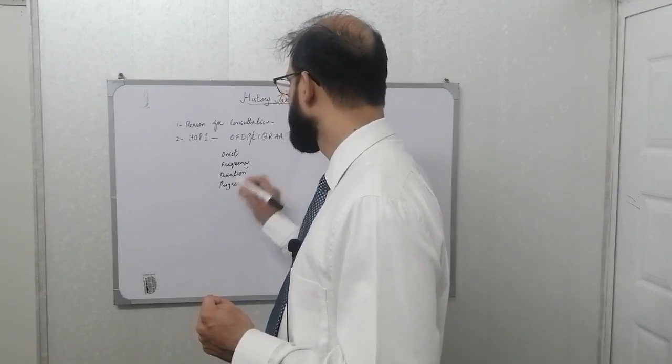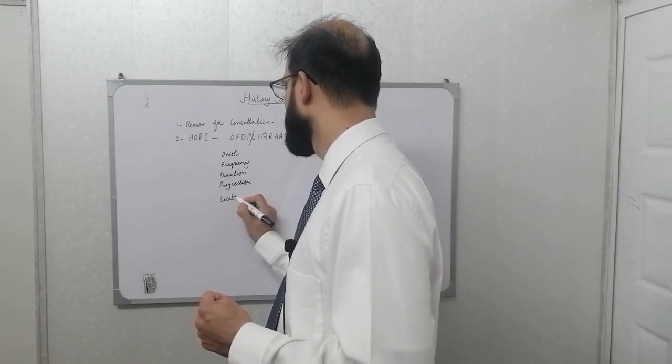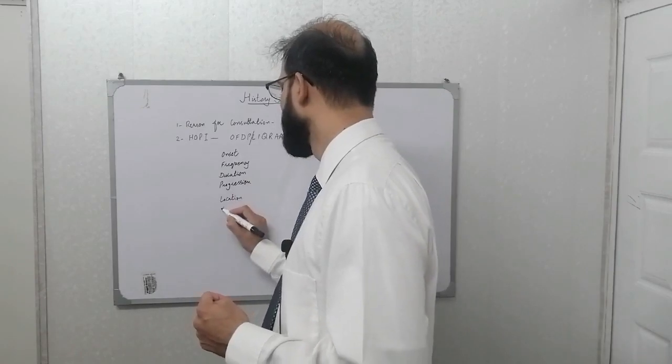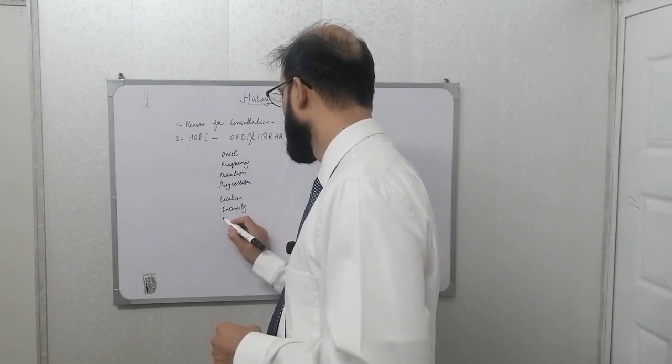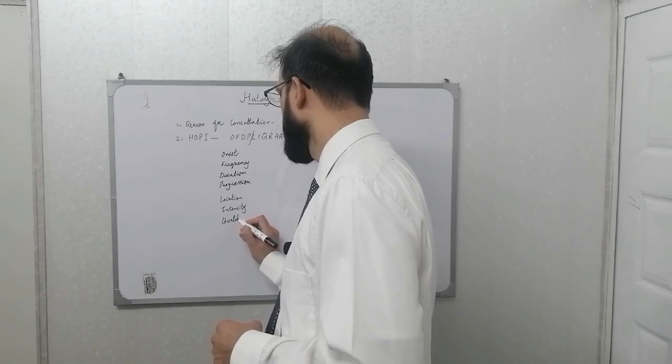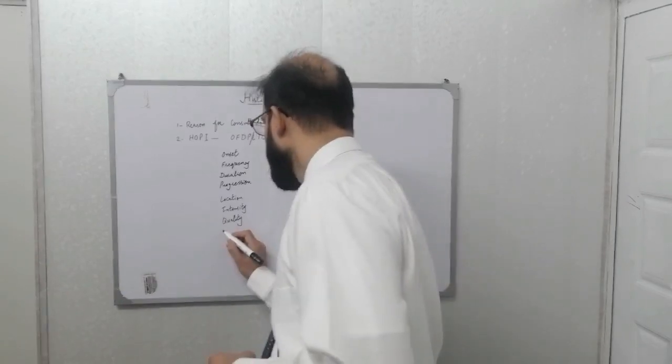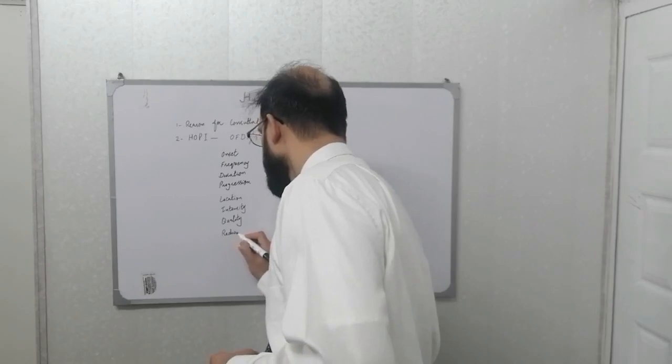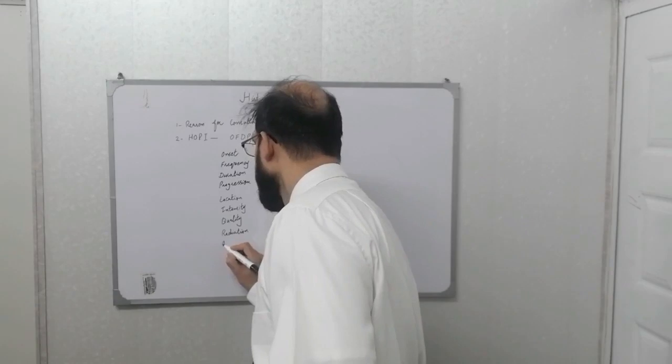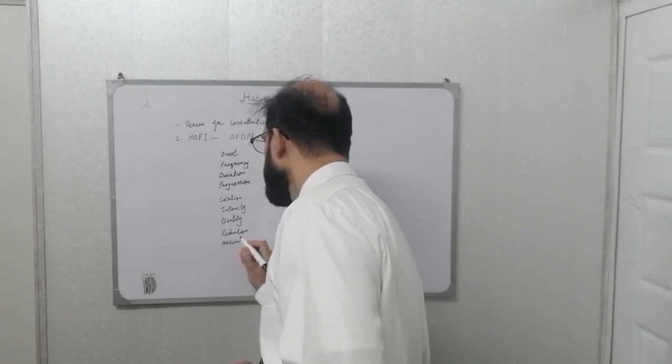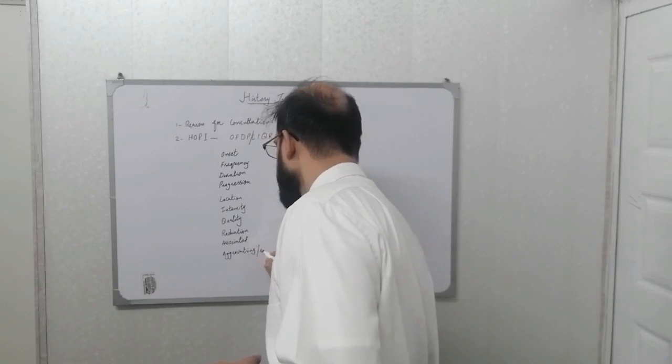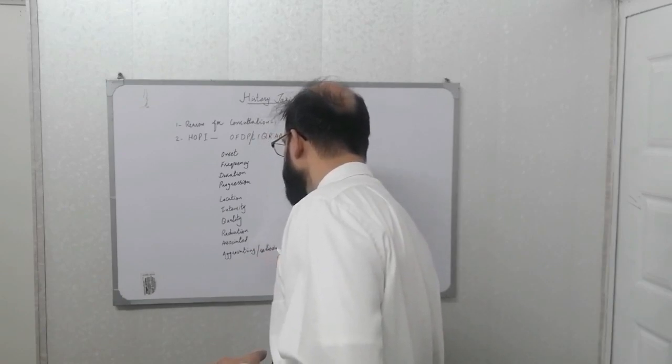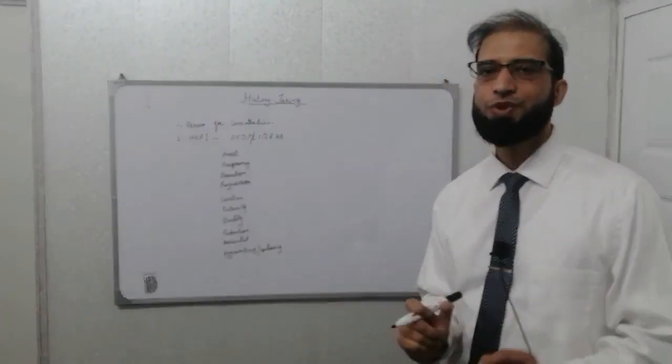And then for the extended scheme, it's location which naturally relates more to the pain, intensity, quality, radiation, and then associated features and aggravating features or relieving factors. This is kind of the basic steps of history of present illness.